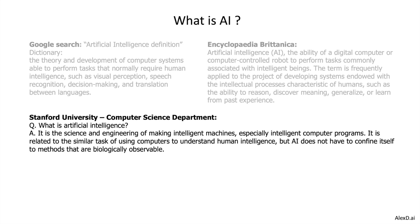If we look at a very renowned institution like Stanford University, what do we get? Artificial intelligence is the science and engineering of making intelligent machines, especially intelligent computer programs. Again, we are talking about giving computer programs, robots, or intelligent machines the same kind of intelligence and ability that we have.